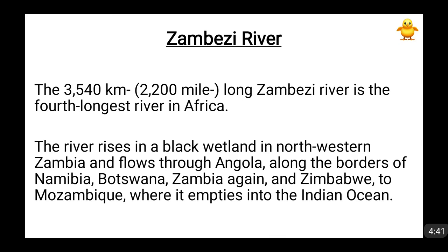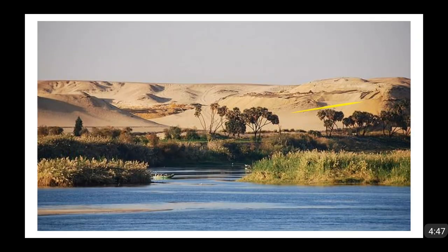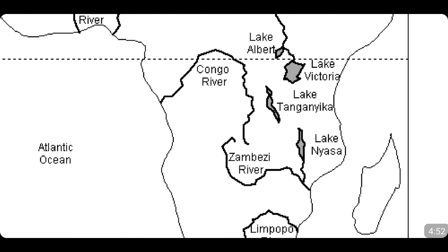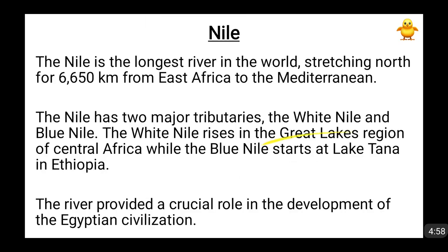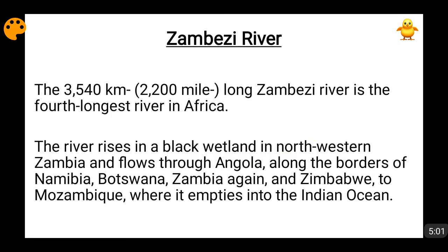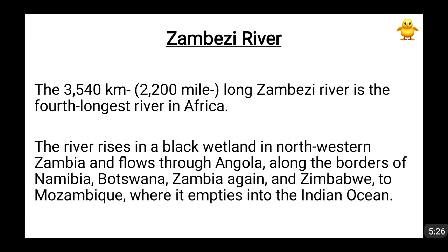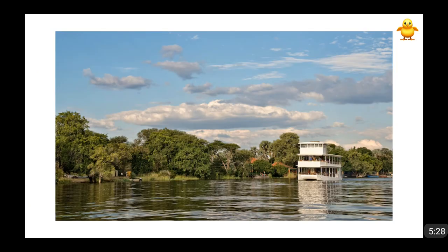Moving forward, we are going to talk about the Zambezi River. On the map here, this is the Zambezi River, which is finally draining into the Indian Ocean. The Zambezi River is 3,540 kilometers long and is the fourth longest river in Africa. This river rises in the black wetland of northwestern Zambia — after the name of its country, Zambia, it is named Zambezi. It flows through Angola, forms the border of Namibia, Botswana, Zimbabwe, and Zambia, then passes through Mozambique, and finally enters the Indian Ocean.